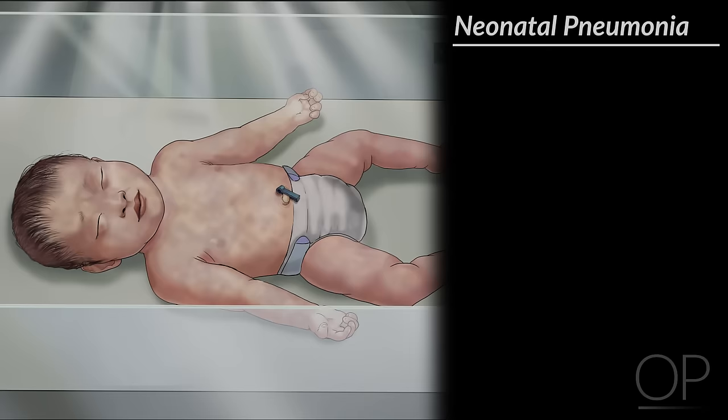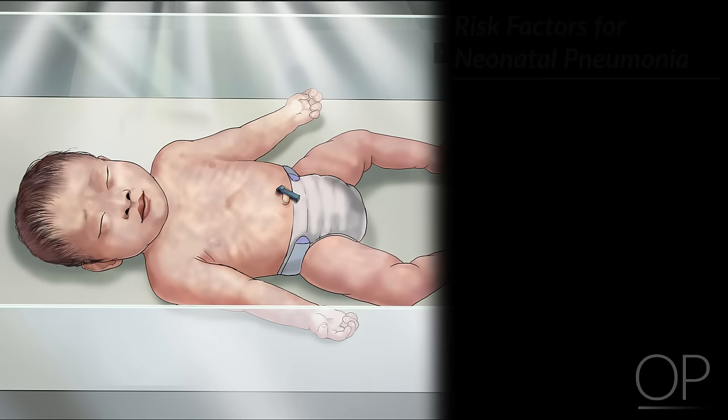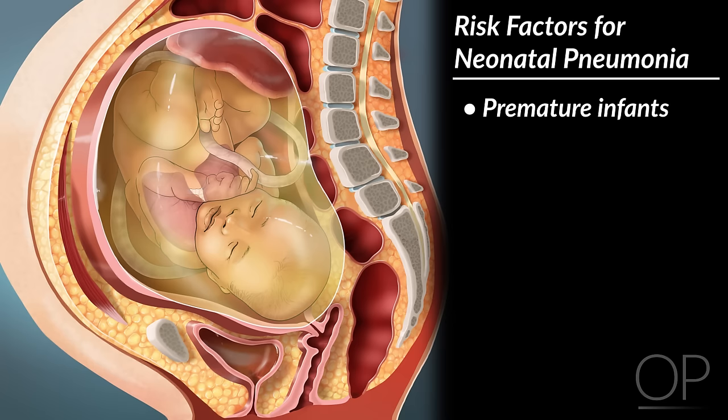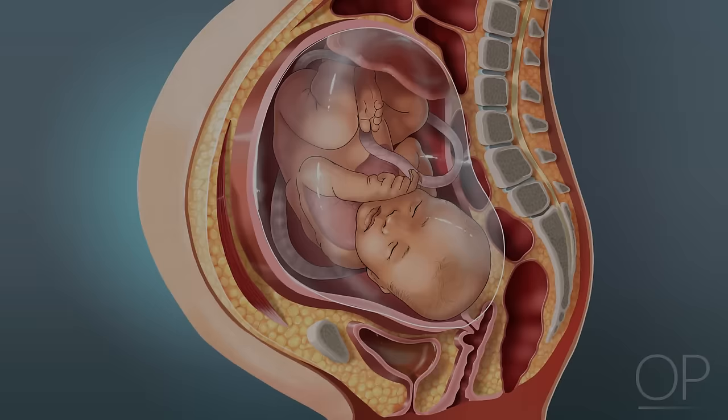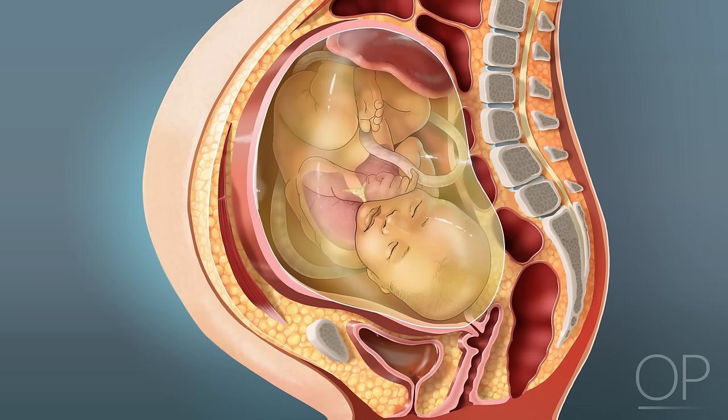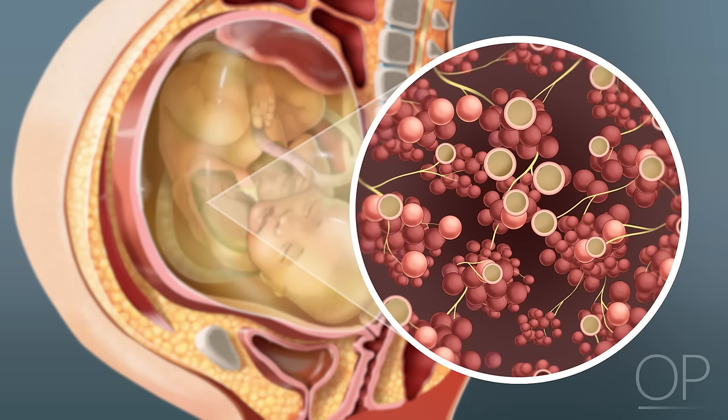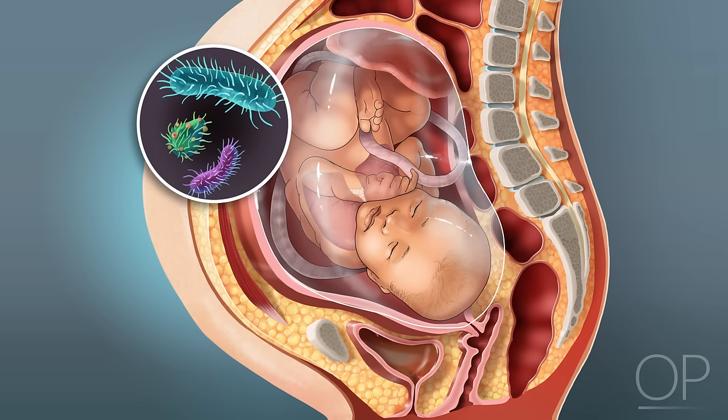Neonatal pneumonia accounts for 11% of cases of neonatal respiratory distress. Pneumonia is more commonly seen in infants born prematurely. Other risk factors include maternal chorioamnionitis and rupture of membranes of greater than 18 hours. Early onset pneumonia, which occurs within three days of birth, is vertically transmitted from the mother via aspiration of infected amniotic fluid or transplacental transmission of organisms via the placental circulation.